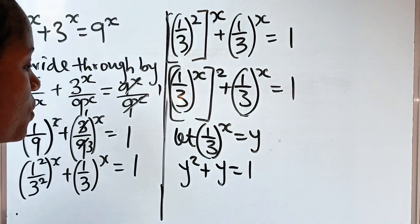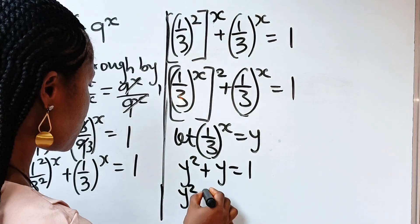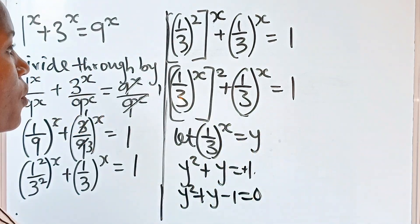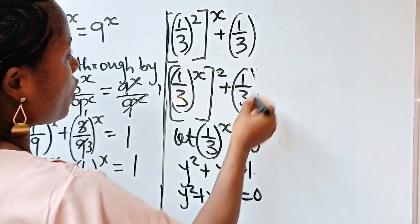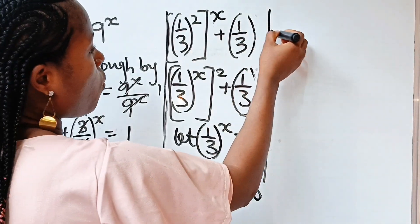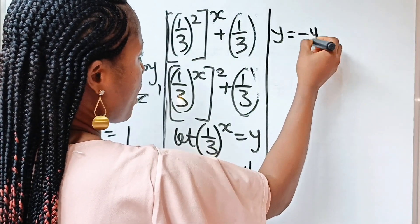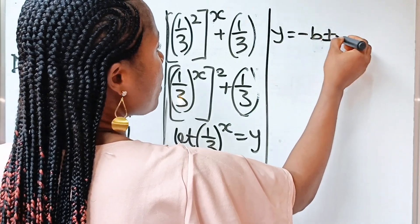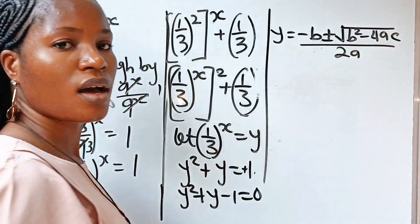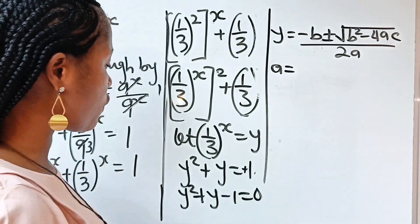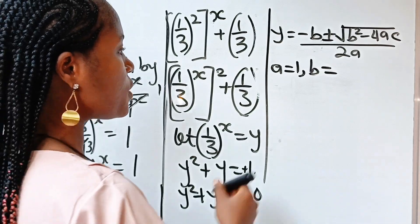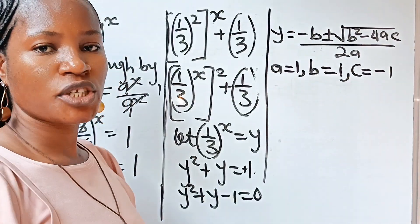So what do we do from here? Let's arrange this well. We have y squared plus y, then minus 1 is equal to 0. This is our quadratic equation. We are going to solve this using the quadratic formula, which states that y is equal to minus b plus or minus square root of b squared minus 4ac, everything divided by 2a. Our a is equal to the coefficient of y squared, which is 1. Our b is the coefficient of y, which is also 1. And our c is our constant, which is minus 1.